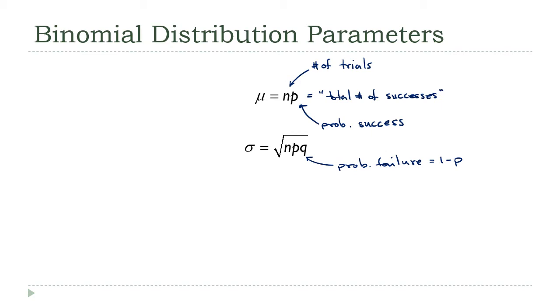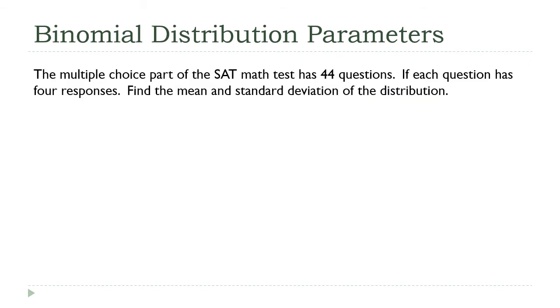What we're getting here is the total number of successes. It really is just kind of a percentage problem. So let's see how we can apply these. I've got a basic binomial distribution set up. On the multiple choice part of the SAT, 44 questions, each question has four responses.